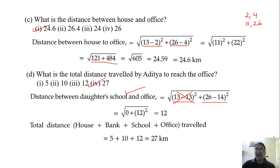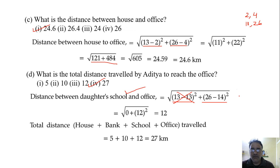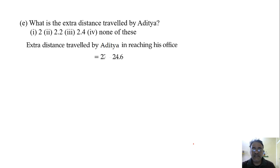Last question: what is the extra distance traveled by Aditya? If he had gone directly, the distance would be 24.6 km, but he actually traveled 27 km. So the extra distance is 27 minus 24.6 = 2.4 kilometers — third option is correct.